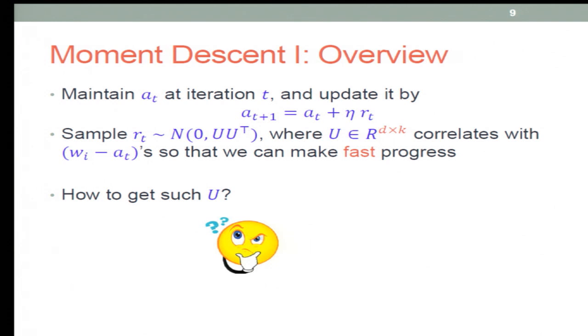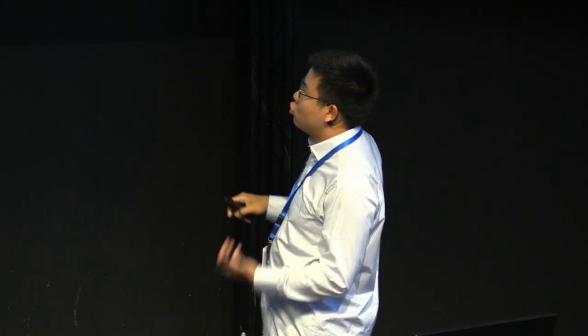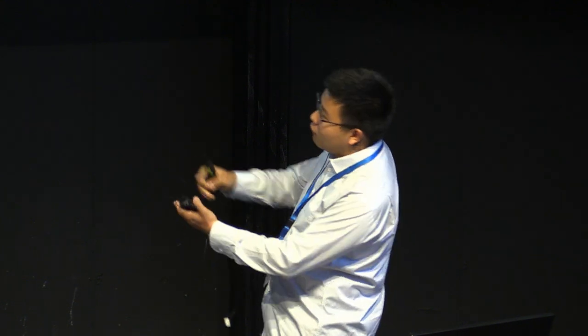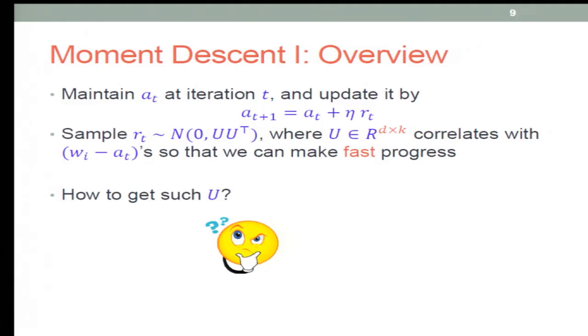But you can actually sample from a degenerate low-rank Gaussian whose rank is k, which is the number of components. You're basically trying to estimate the span of all the ground truth minus your current iterative points. And how do you do that?